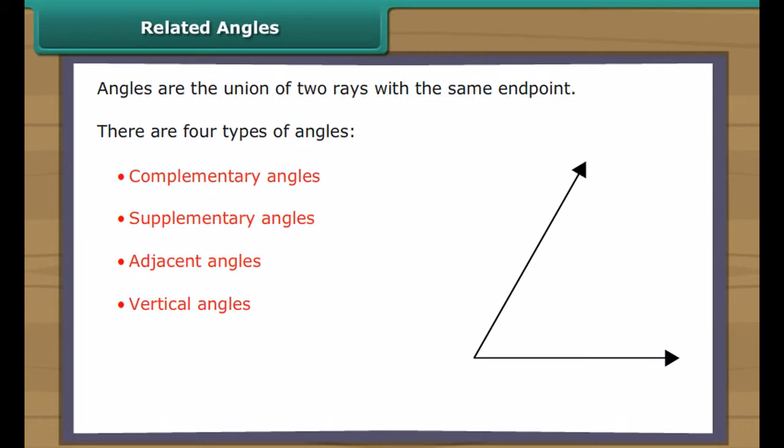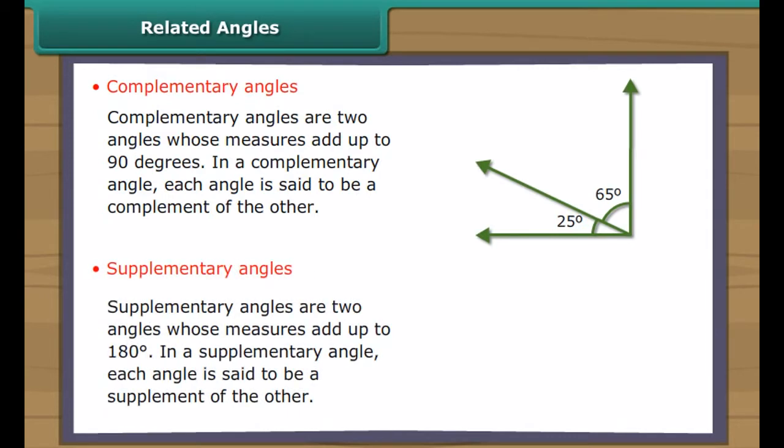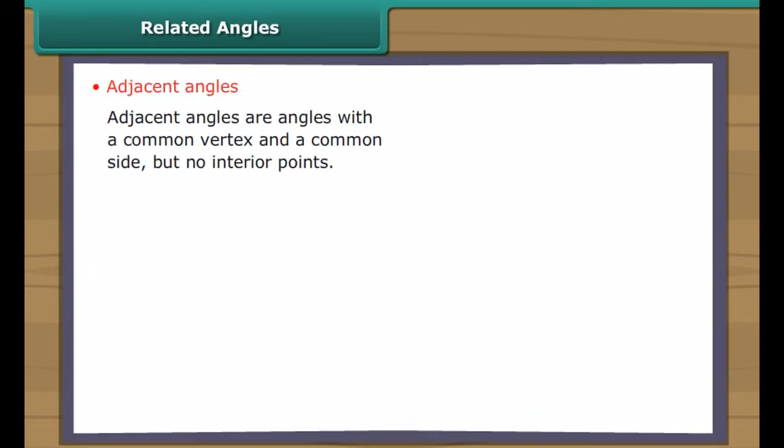Related Angles. An angle is defined as the union of two rays that have the same end point. The sides of the angles are the two rays, while the vertex is the common end point. There are four types of angles. They are complementary angles,